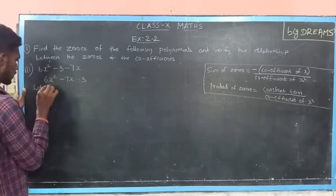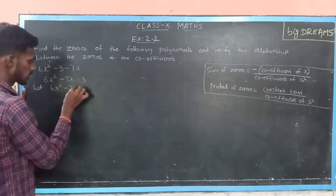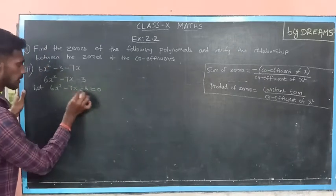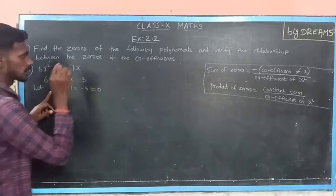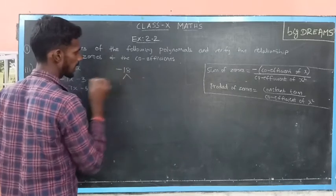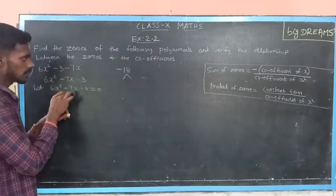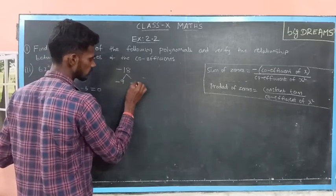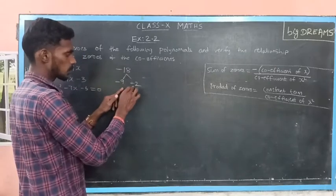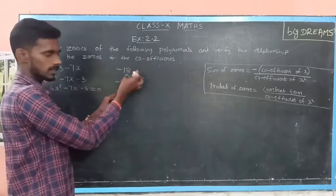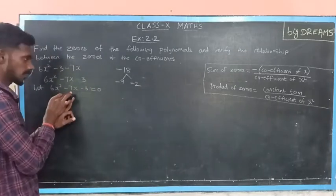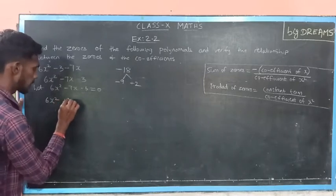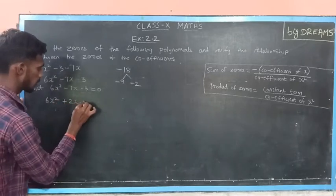Let the value of the polynomial be 0. Then, I have to find the factors for 6 into minus 3, which is minus 18. So, I have to find the factors for minus 18. Here the sum is minus 7. So, I am going to split it as minus 9 plus 2. Minus 9 into plus 2 gives minus 18, and minus 9 plus 2 gives minus 7. So, 6x squared minus 7x can be written as plus 2x minus 9x.